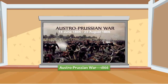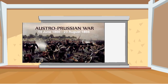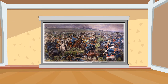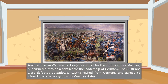Now let's talk about the Austro-Prussian War of 1866. The Austro-Prussian War was no longer a conflict for the control of two duchies but turned out to be a conflict for the leadership of Germany. The Austrians were defeated at Sadowa. Austria retired from Germany and agreed to allow Prussia to reorganize the German states.